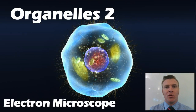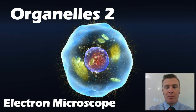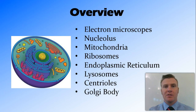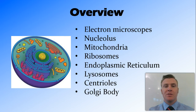In this video, we're going to look at some more organelles, and in particular, organelles that are visible with the electron microscope. We're going to talk about electron microscopes and how they work. We're then going to look at some organelles, including the nucleolus, the mitochondria, ribosomes, the endoplasmic reticulum — both the smooth and rough — lysosomes, centrioles, and the Golgi body.